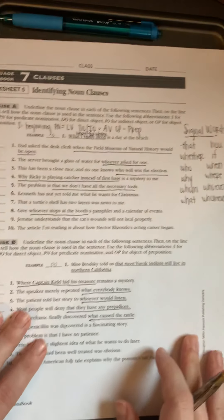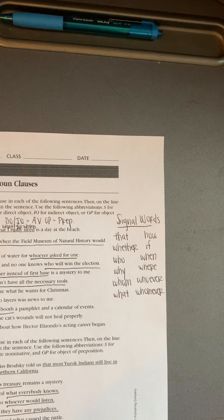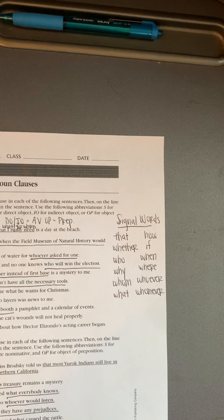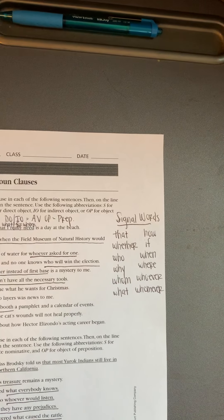One more time — there are your signal words. You can copy them down somewhere if that helps. Those are the words you're looking for as far as your noun clauses are concerned. When you try to figure out what they're acting as, look in front of it, or if it's at the beginning of your sentence, you know it's your subject. And that's worksheet number two for the week.